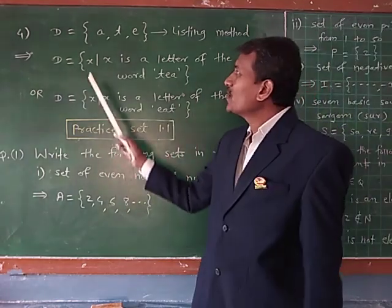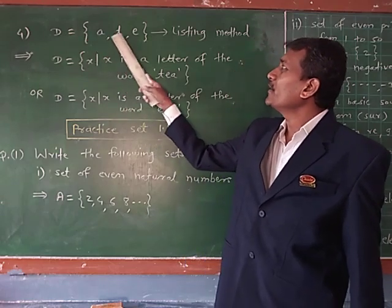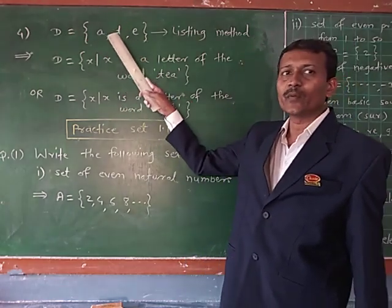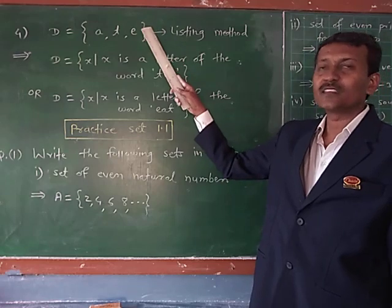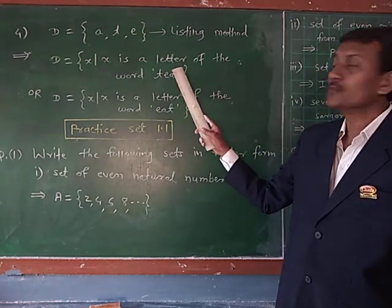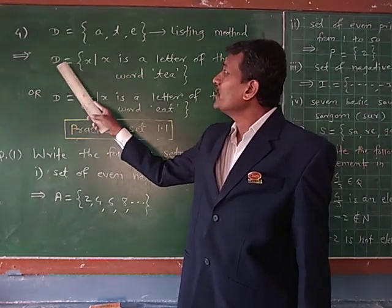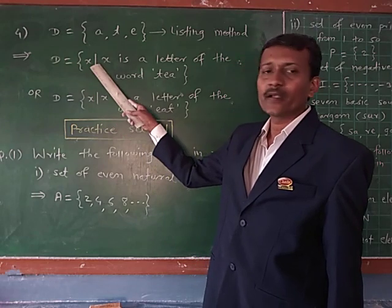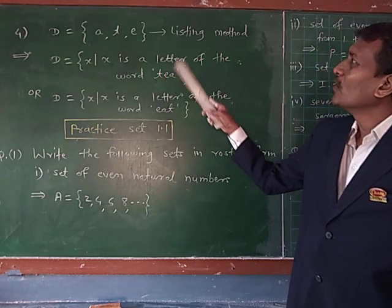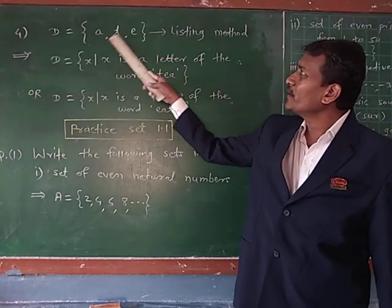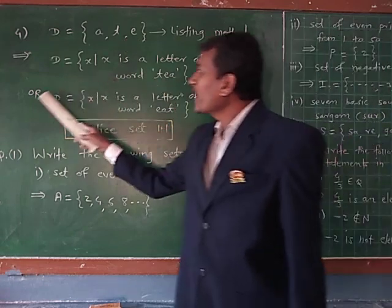Then example number 4: D = {A, T, E}. There are 3 members: A, T, E. This example is in the listing method. Convert this example into set builder form or rule method. The answer is: D is the set of all x such that x is the letter of the word THE. From the alphabet A, T, E — the word is THE.